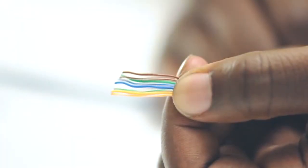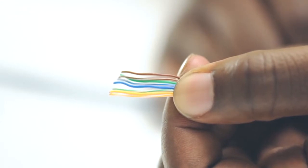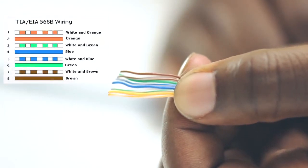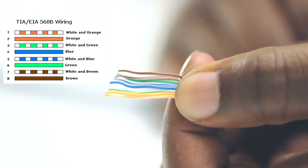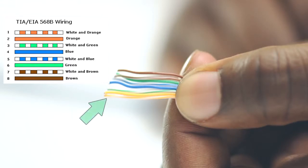We are making a straight through patch cable and following the 568B color code. The color code tells you the order and placement of the colored wires. Line up the wires to visually match this diagram. The first wire, the orange white, will be on your left.